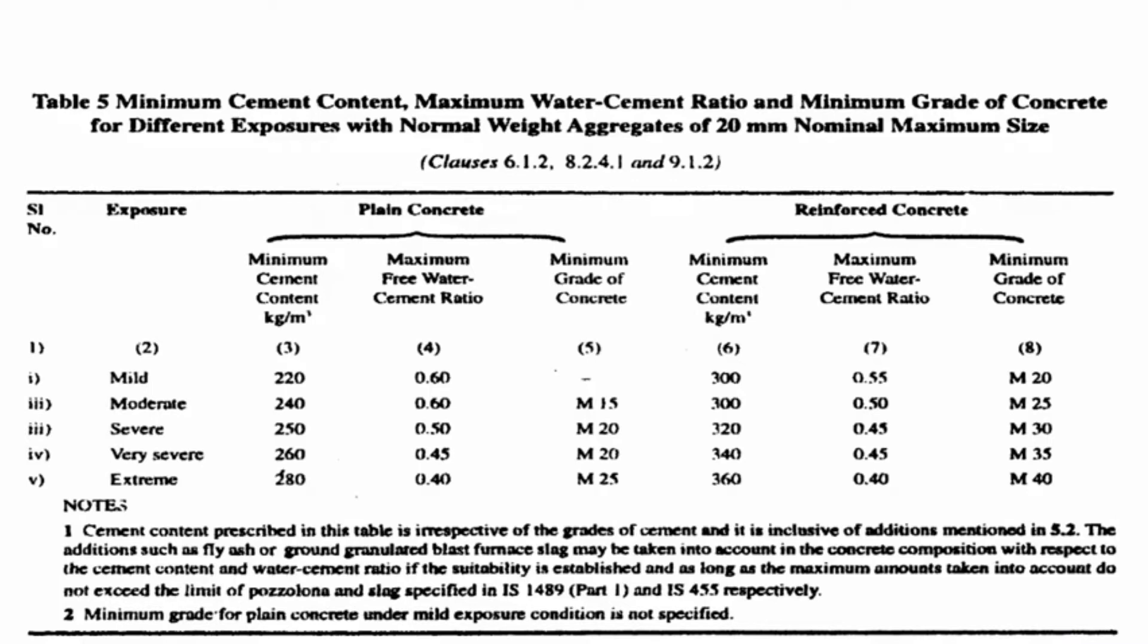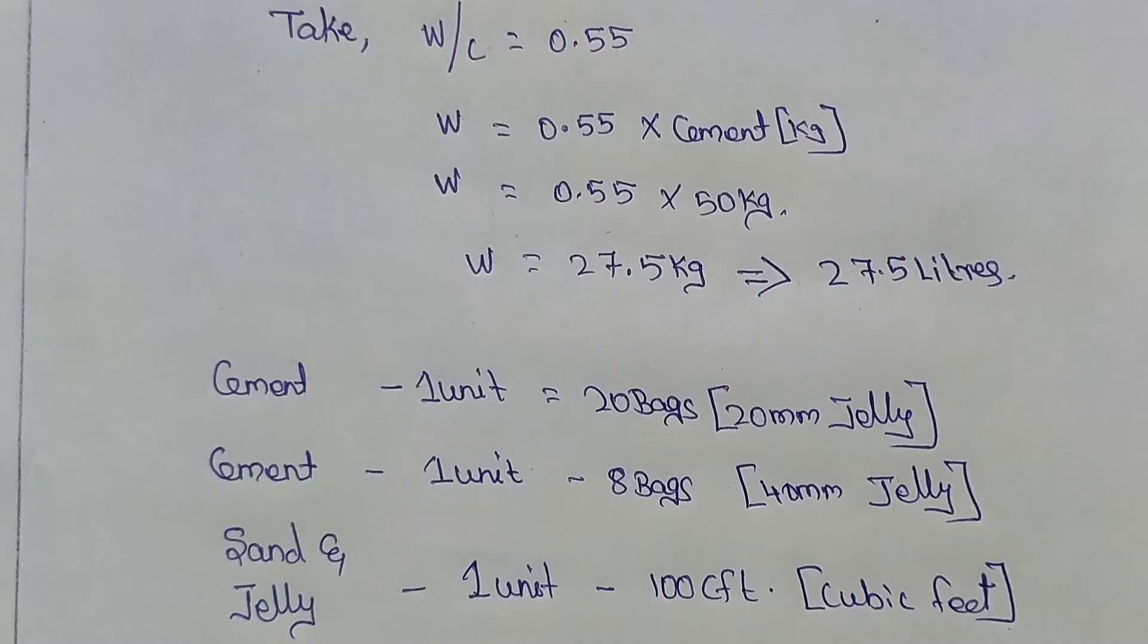M20 grade first is plain concrete without steel. In this case, we will mix 0.4% of water. In this case, we will use 300 kg to 0.55% of water. We will mix it with plain concrete and reinforced. We will check the IS-456 specification.